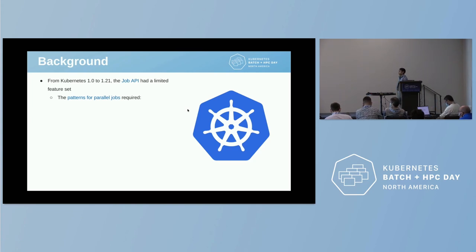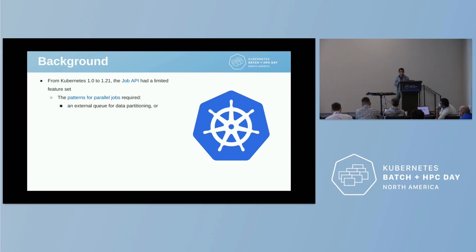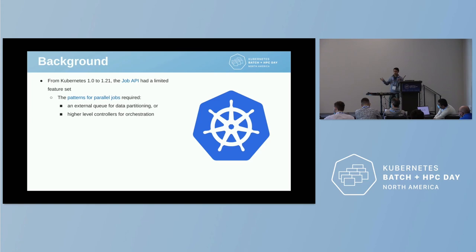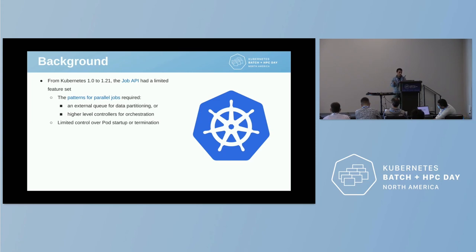In particular, when you wanted to run parallel applications in Kubernetes, you ran into a number of problems. As you might know, in the Kubernetes documentation, we proposed a set of patterns for how to run parallel jobs, and they were actually cumbersome. For example, you had to set up an external queue just to do data partitioning. Or another recommendation was, if you wanted to run the same job across different sets of data, you had to set up your own orchestrator around the job controller. And of course, there is limited control over startup or termination of the pods, how to control retries, or rather fail a job, et cetera.